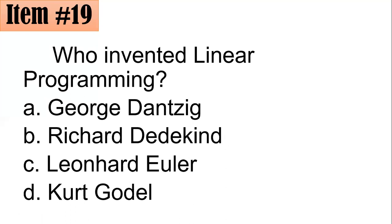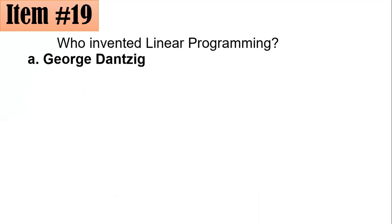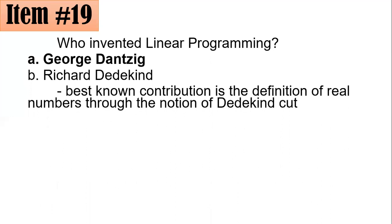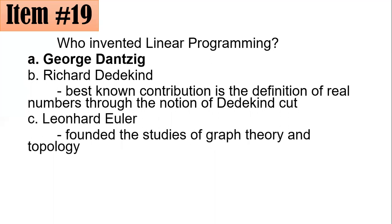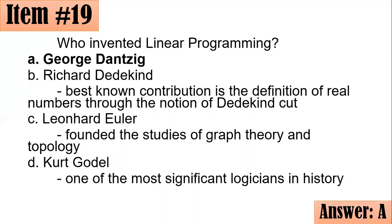Number 19. Who invented linear programming? Is it George Danzig, Richard Dedekind, Leonard Euler, or Kurt Gödel? Letter A is correct — linear programming was invented by George Danzig. Richard Dedekind is known for defining real numbers through the Dedekind cut. Leonard Euler founded graph theory and topology. Kurt Gödel is one of the most significant logicians in history.